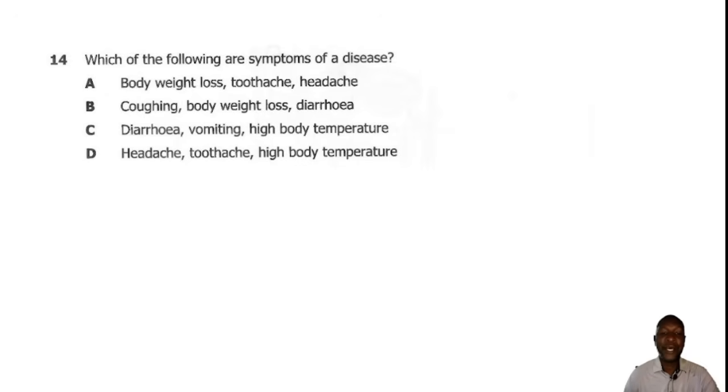Question 14. Which of the following are symptoms of a disease? When you're talking about symptoms, these are factors which are basically felt by the patient and they are not observed by the doctor or physician. What cannot be seen and only felt by the patient is, for example, a headache. We can also feel the toothache that is only felt by the patient and also high body temperature. You can see that this person's body temperature is high, you have to first feel it. But weight loss, you can see that the person is losing weight. Coughing, you can see that the person is coughing. Diarrhea and vomiting, those can be seen. So the correct answer is D.